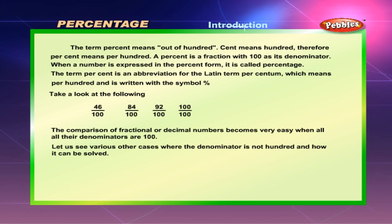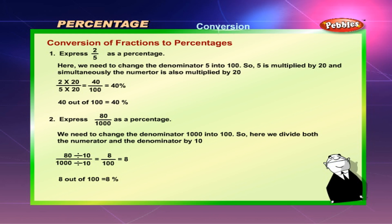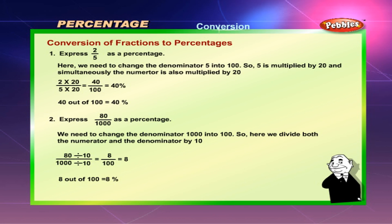The comparison of fractional or decimal numbers becomes very easy when all the denominators are hundred. Conversion of fractions to percentages: express 2/5 as a percentage. Here we need to change the denominator 5 into 100, so 5 is multiplied by 20, and simultaneously the numerator is also multiplied by 20. 2×20 / 5×20 = 40/100, which is equal to 40%. 40 out of 100 is equal to 40%.